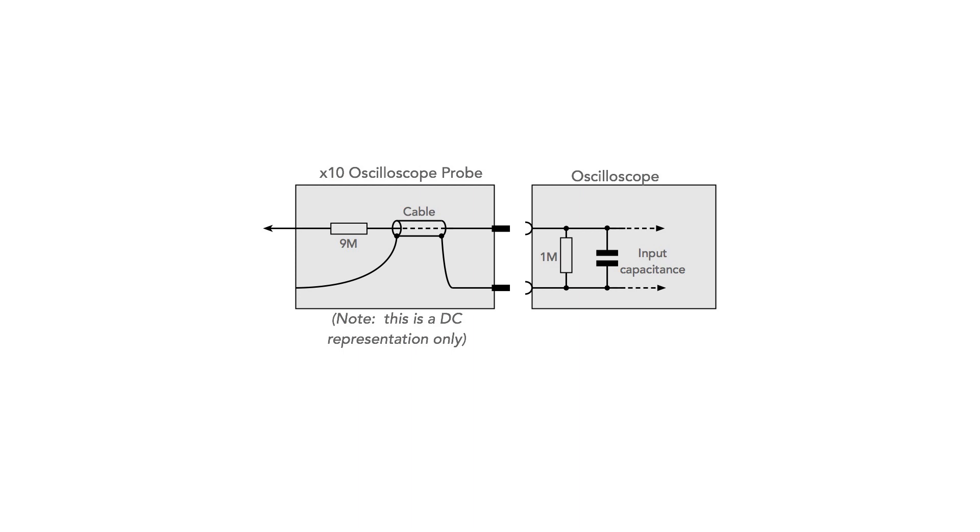For times ten probes, to compensate for the scope capacitance, a capacitor is placed across the nine megaohm resistor in the probe. Compensation adjustment is provided either at the remote end of the probe or where it connects to the scope. The adjustment enables the correct capacitance potential divider ratio to be obtained to take up any small changes in capacitance, and this gives a flat response.